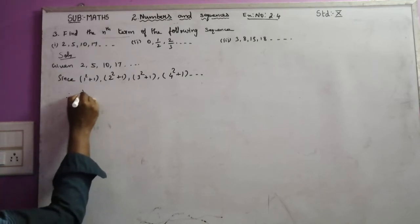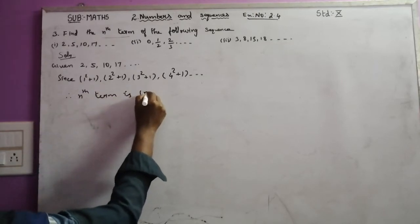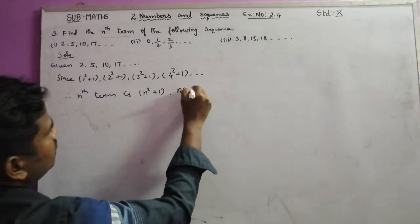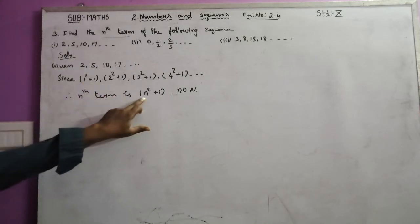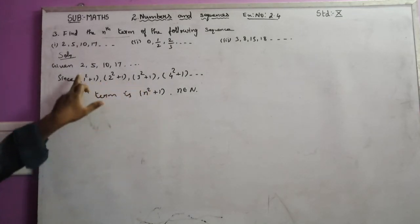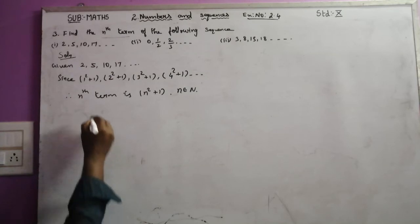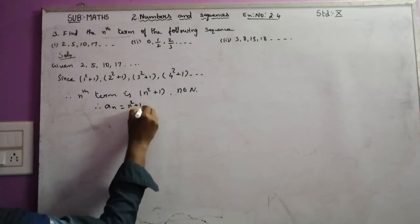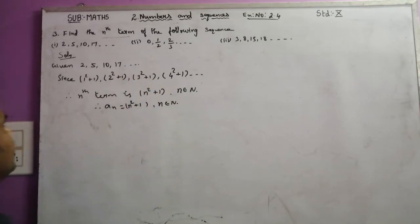So the nth term is n squared plus 1, where n belongs to the natural numbers. a(n) = n² + 1, n belongs to the natural numbers. First solution complete.